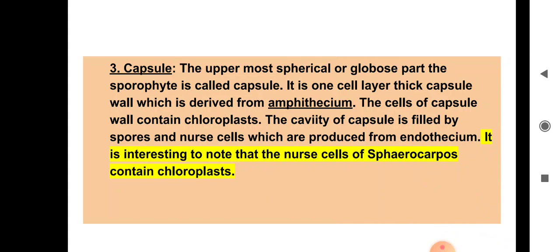The capsule wall is derived from the amphithecium. The cells of the capsule wall contain chloroplasts and carry out photosynthesis. The capsule is filled by spores and nurse cells, which are produced from the endothecium. The nurse cells of Sphaerocarpos contain chloroplasts — they function like elators, but true elators are absent.